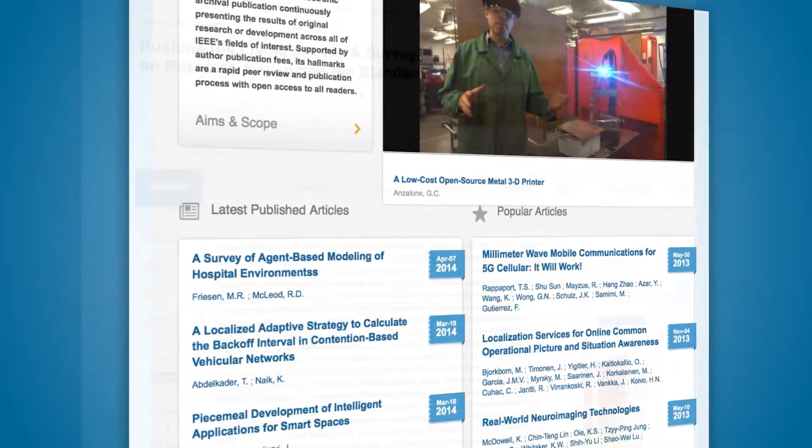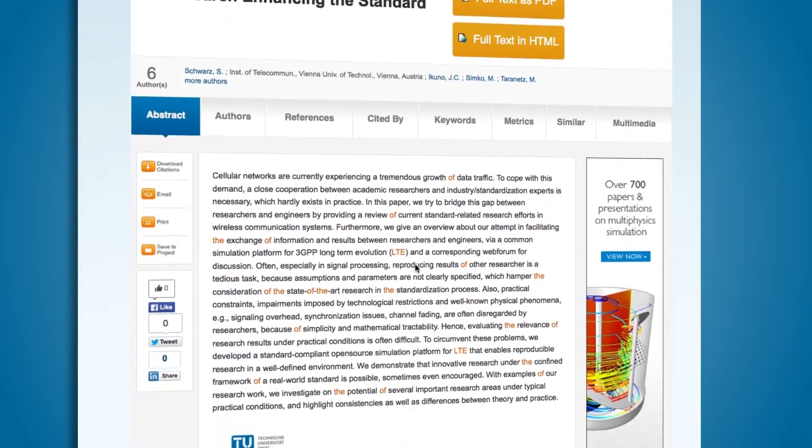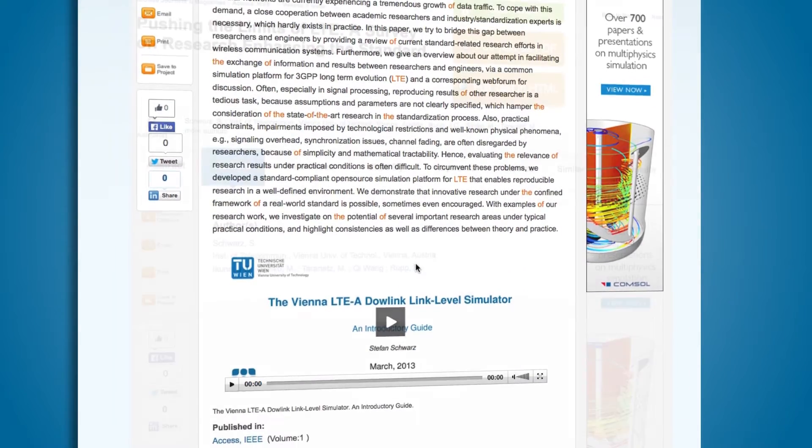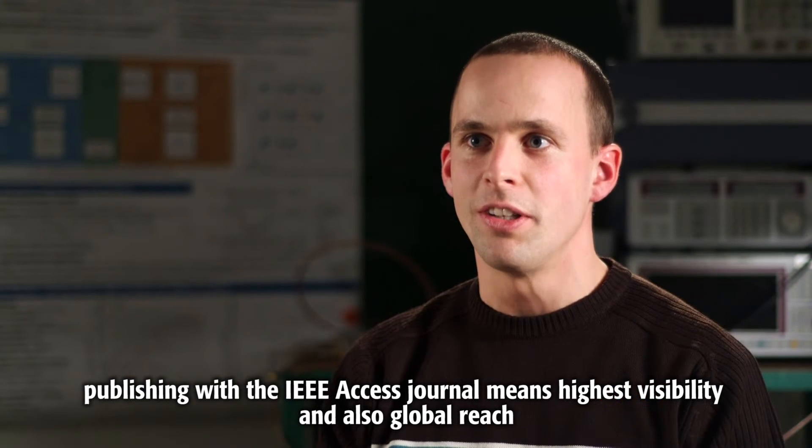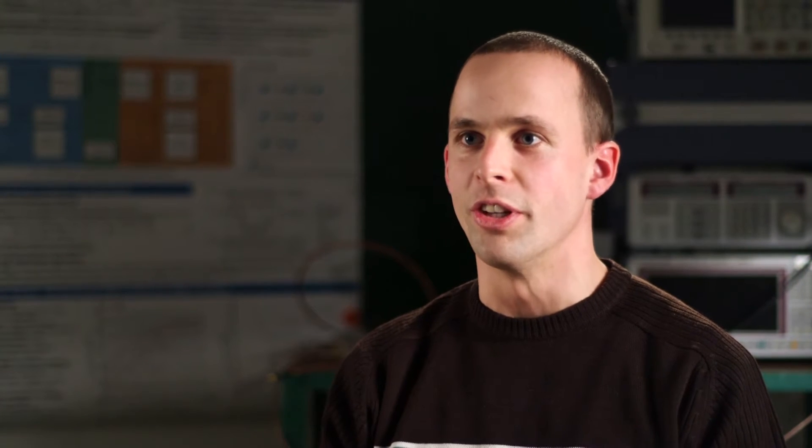The IEEE is one of the largest and worldwide most influential societies for engineers. Therefore, publishing with the IEEE Access journal means highest visibility and also a global reach within the scientific community.